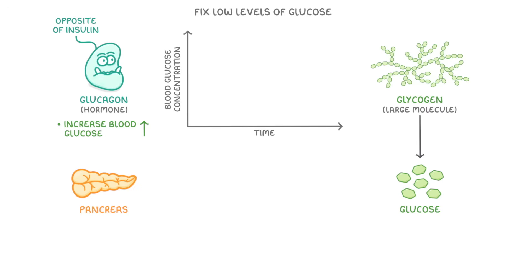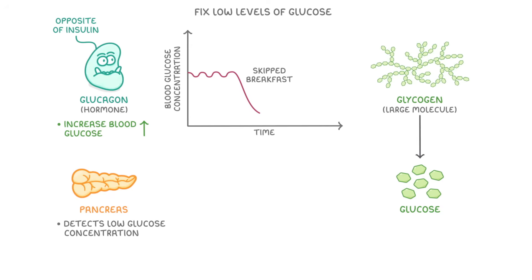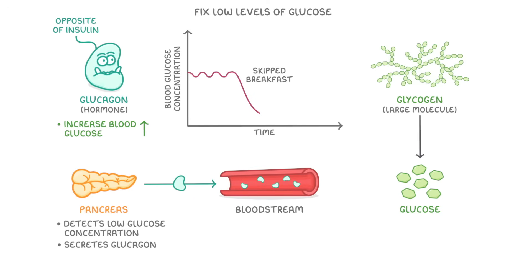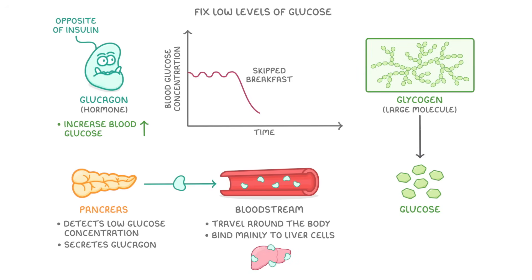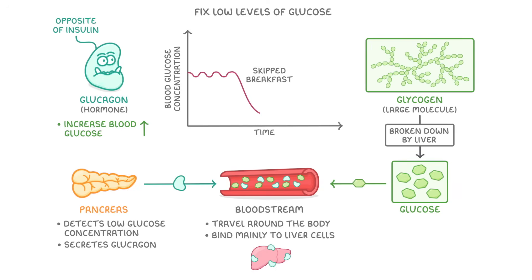So if we look at our graph again and imagine that our blood glucose levels drop too low — for example because we skipped our breakfast and have been rushing about all morning — then our pancreas would detect this low concentration of blood glucose and secrete glucagon into the bloodstream. As the glucagon travels around the body, it would bind to lots of different cells, but mainly liver cells, which would take that glycogen we mentioned earlier and break it down into lots of glucose molecules again, then release these glucose molecules into the blood. This would bring the blood glucose concentration back up to normal, so that all of our cells have a good supply of it for respiration.